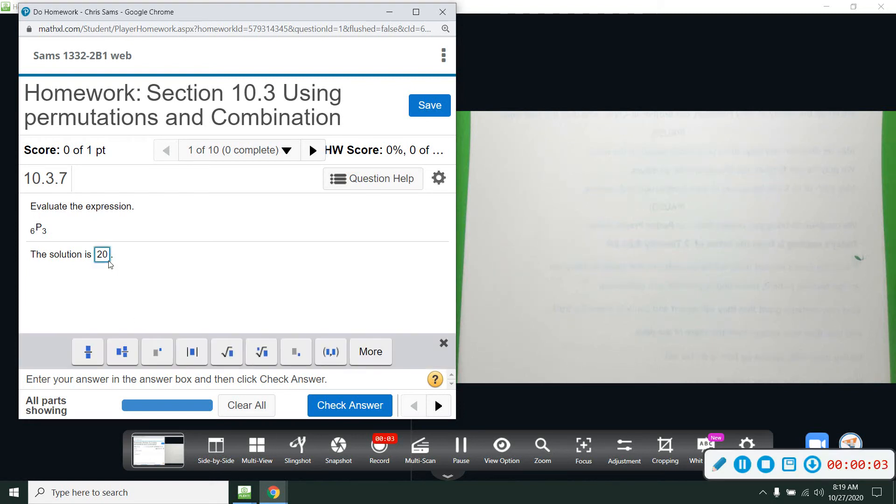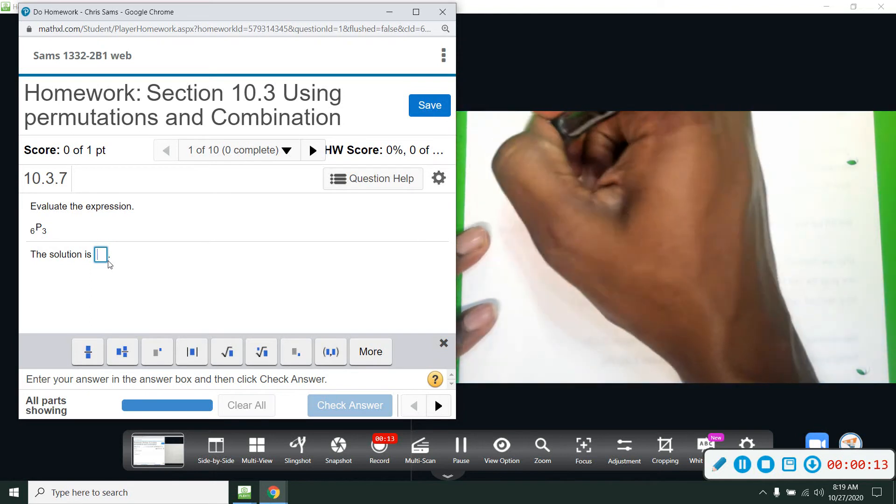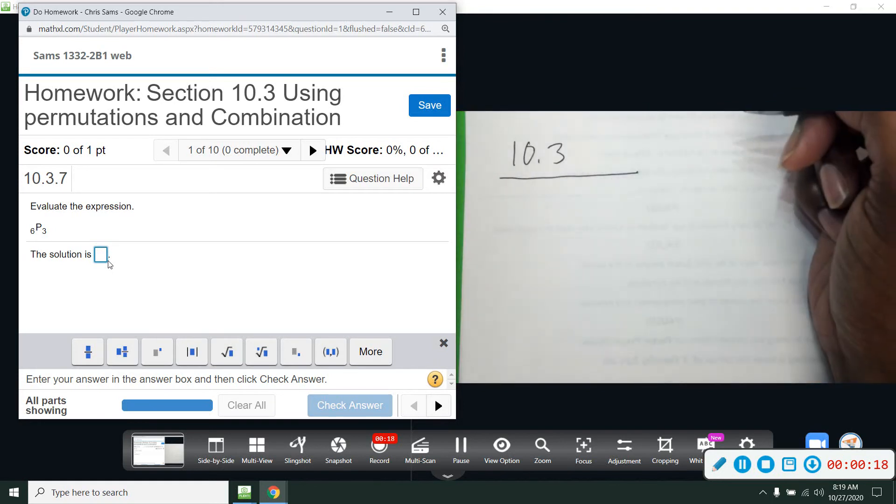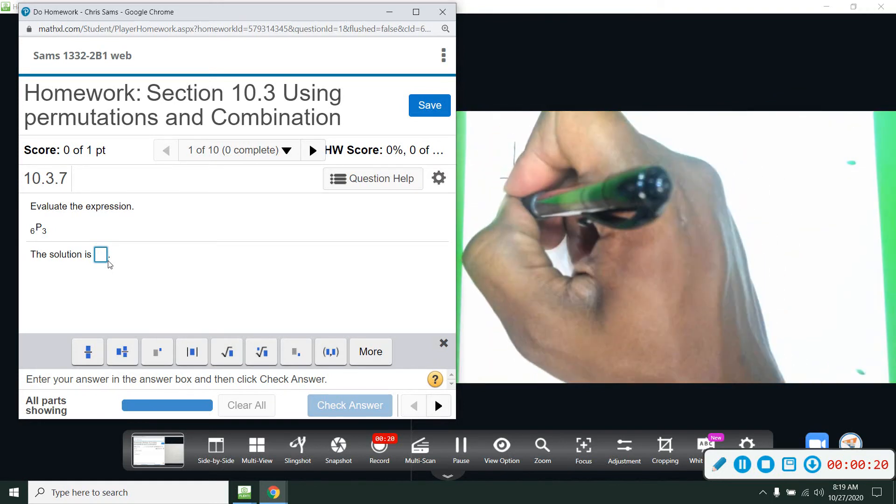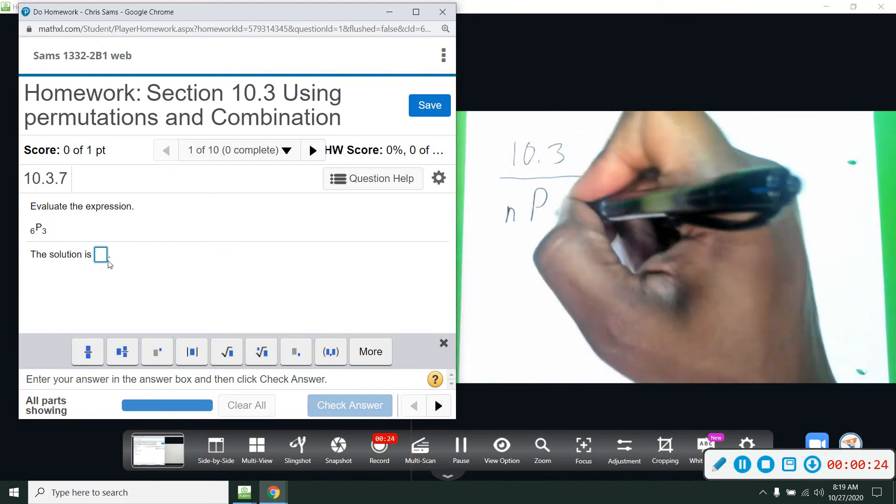All right, number one. We're going to be looking at permutations and combinations. I'm going to start out showing you the formula. I'm going to give you a verbal definition, but you can look at the book and get a more formal definition. nPr - that P stands for permutation.